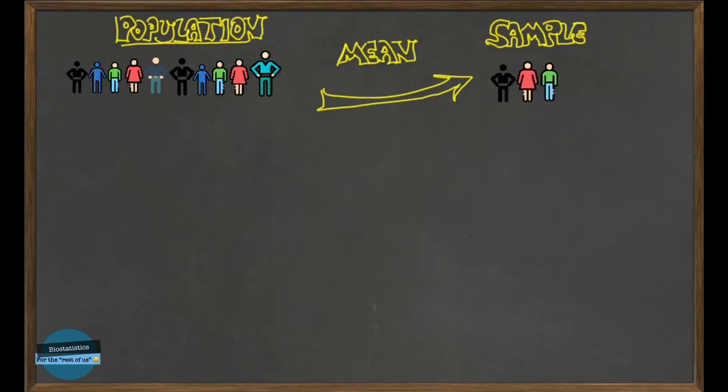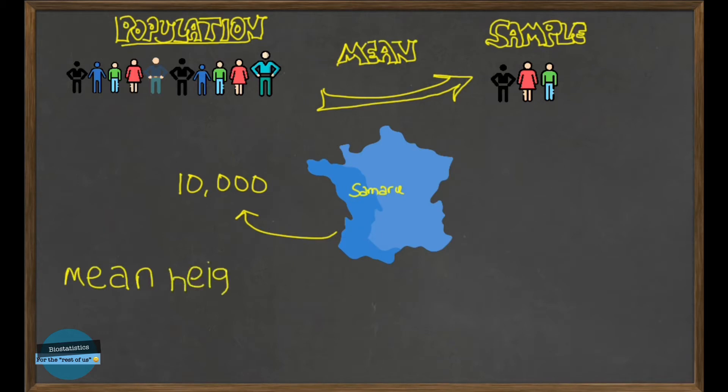So assuming we wanted to determine the mean height of individuals in Samaru community with 10,000 individuals, we could line up all those individuals and measure their heights, then find the mean. So we'll be finding the mean height. And since we obtained this mean height from the entire population, then what we have is called the population mean.